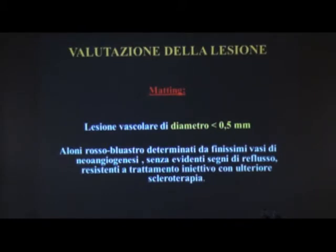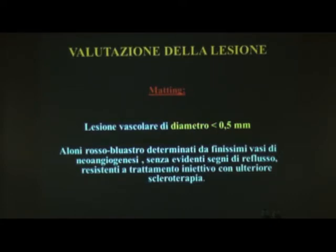Per la valutazione della lesione ci rifacciamo alla classificazione CEAP. Per il matting partiamo dalle lesioni più fini, cioè di diametro al di sotto di 0,5 mm. Questa è una situazione che molto spesso si presenta come una complicanza della scleroterapia ed è costituita da un alone rosso-bluastro determinato da vasi finissimi di neoangiogenesi, che non hanno a volte un evidente segno di reflusso in un unico punto e che sono resistenti a nuovi trattamenti di scleroterapia.